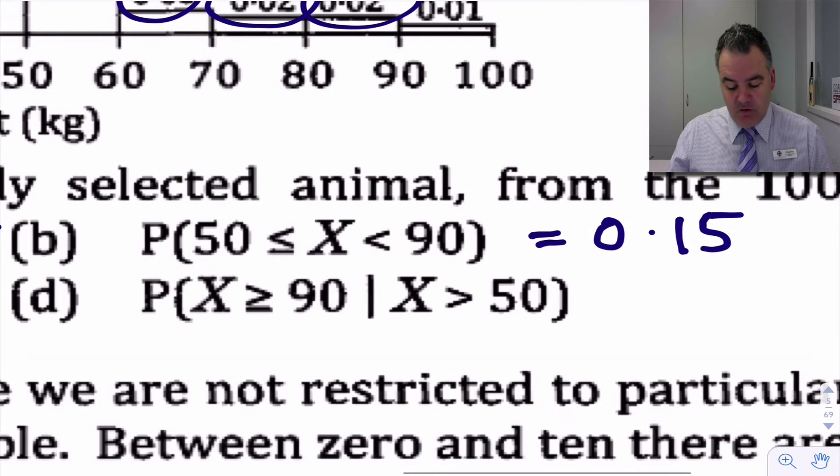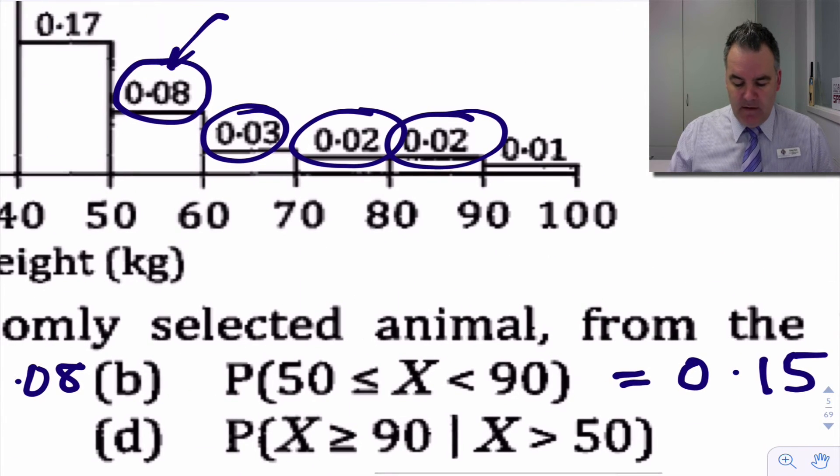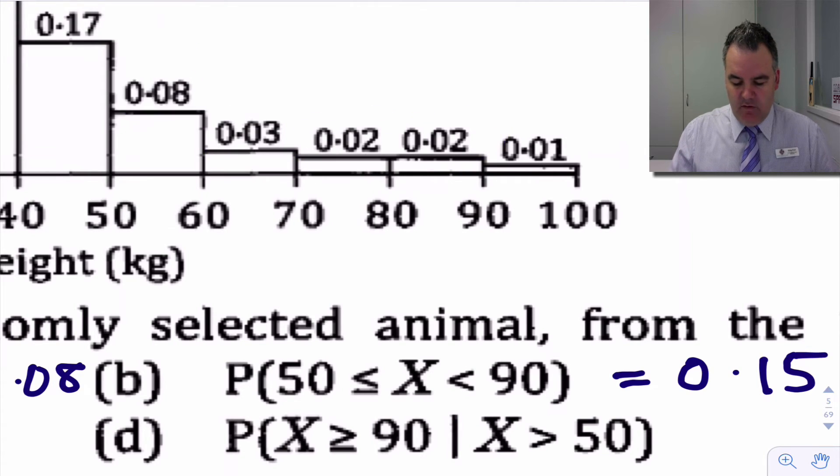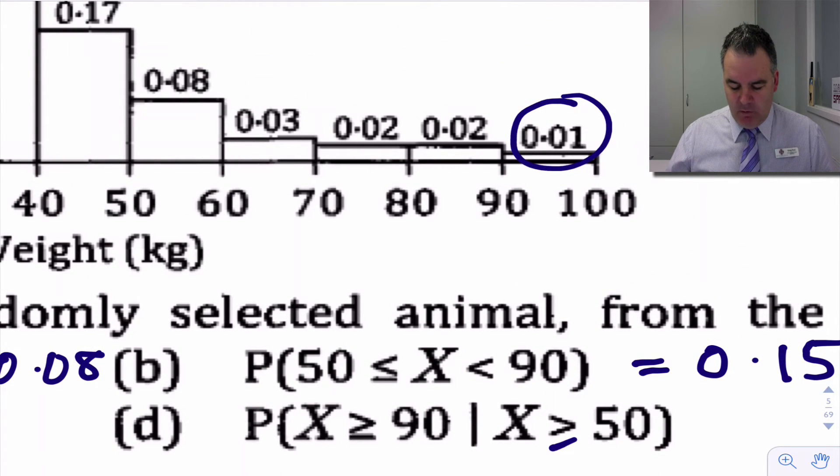And D, a little bit of conditional probability here. What's the chance that we are more than 90 kilos? So that is, looks like there's only one animal in that range, given that we're greater than 50. And again, I could have greater than or equal to 50 here, it wouldn't matter.